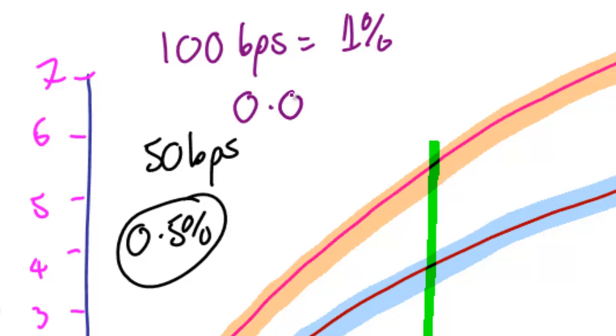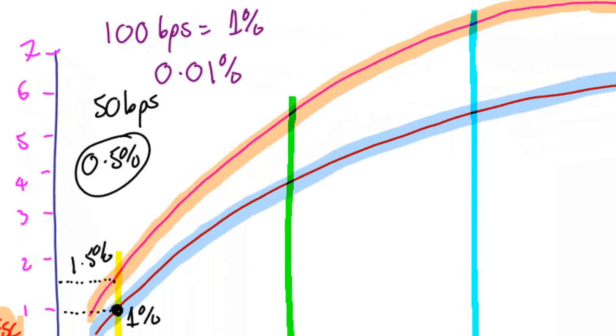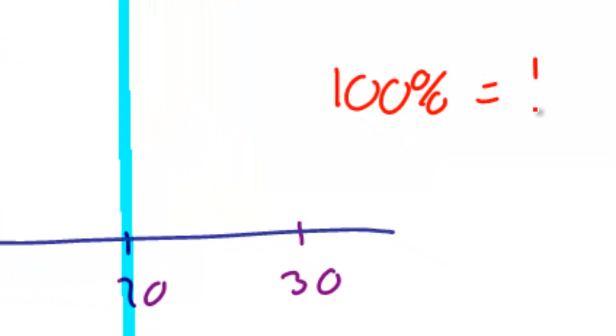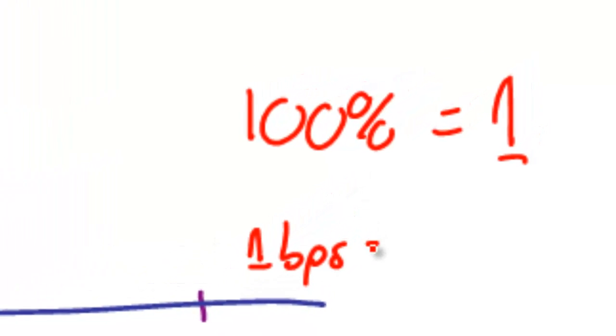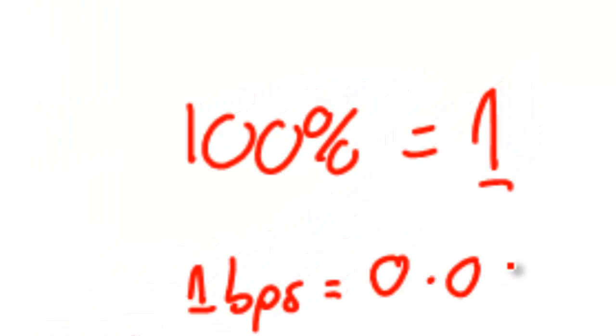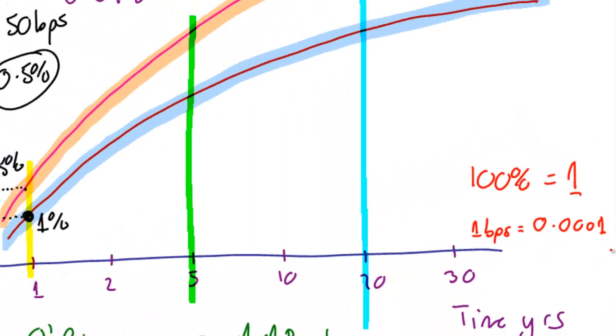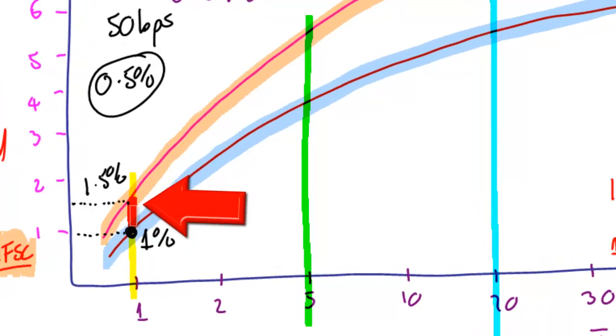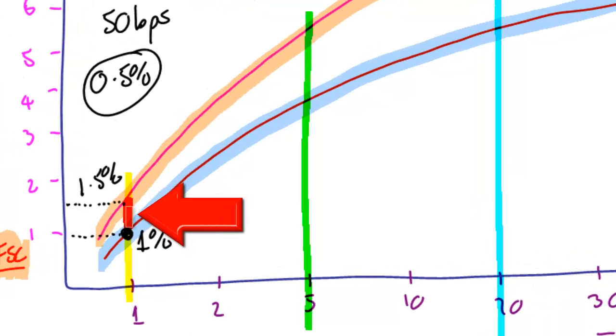100 basis points equals 1%. If we do that in terms of percent, that's going to be 0.01%. If we have the equation where 100% equals 1, then that's also going to be 1 basis point is going to be equal to 0.0001, which is quite a small number. So 50 basis points then between the two different organisations. And that is the credit spread for a 1 year issue.